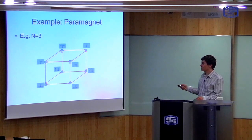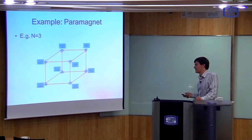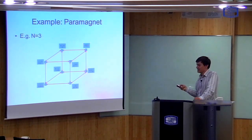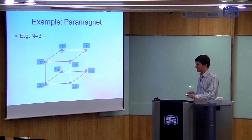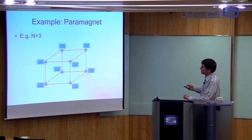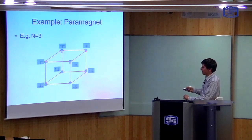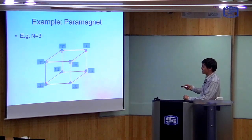For the case where I only have three atoms, it's simple enough that I can actually draw the picture. There are eight different possibilities — each spin either points up or down, so there are one through eight. I can draw them on the vertices of a cube. And each time a spin-flip event happens, I can go from this microstate to this microstate, then to this one, then to this one. Each time a spin-flip happens, I change microstate by moving around the edges of this cube.